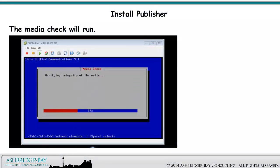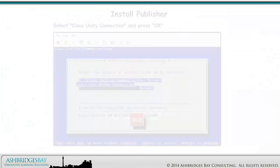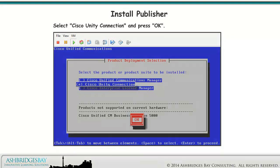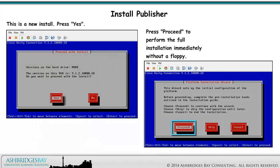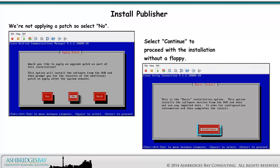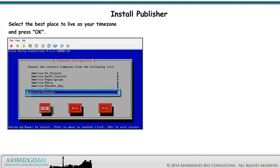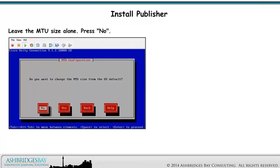The media check will run. After a short while, the integrity of the media should be verified. Select Cisco Unity Connection and press OK. Installing CUC also installs a co-resident ELM. This is a new install, so press Yes. Press Proceed to perform the full installation immediately without a floppy with the platform configuration. We're not applying a patch, so select No. Select Continue to proceed with the installation without a floppy. Select the best time zone for your location and press OK. Auto-negotiation doesn't make a lot of sense for a VM, so select Continue.